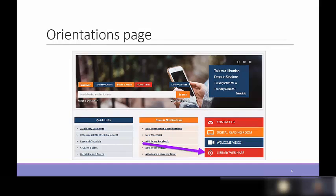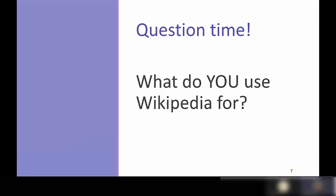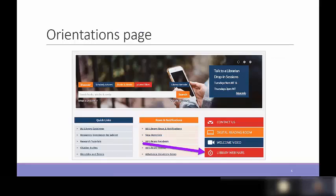You can find our upcoming webinars on the orientations page, which is also where I'll post a link to the recording of this session. Our next webinar is on February 10th, called 'AU Has a Library,' which covers general searching and navigating the library homepage — similar to the Hack the Library session but really useful for learning more about the library.